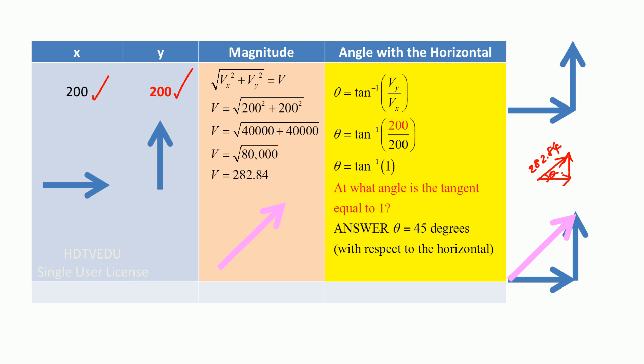Theta is tan inverse vy over vx. Vy, the y component divided by the x component. Tan inverse y divided by vx. The y component is 200, the x component is 200. So what is the angle? Tan inverse 1.